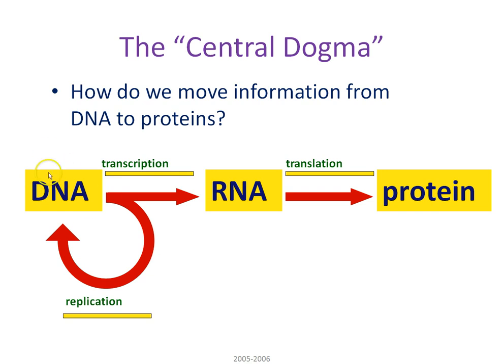Every one of your cells has a complete set of the codes for making any protein that you need in your body. To make an extra copy of DNA for all the cells in your body, the process is called replication. Replication basically involves making an identical copy of DNA, one for each of the two new cells made by mitosis or mitotic cell division.